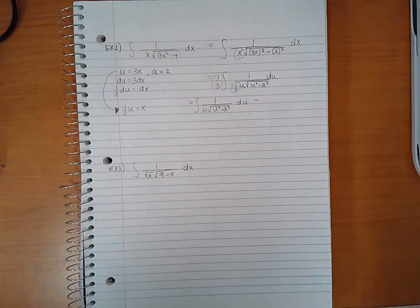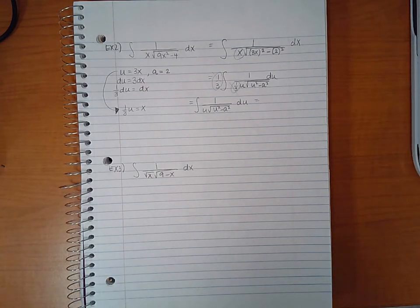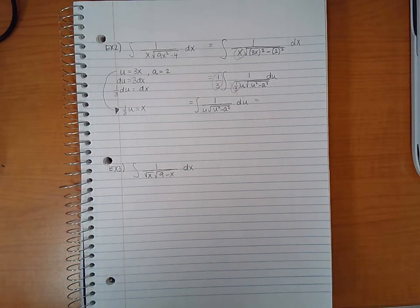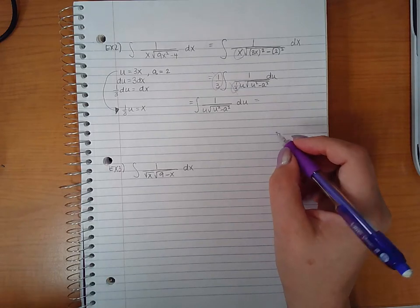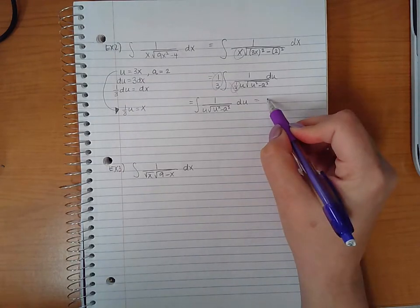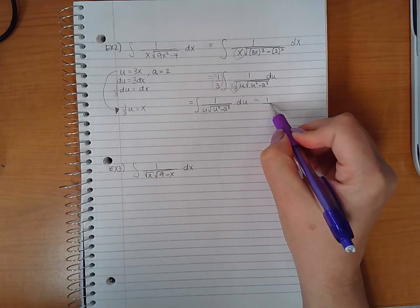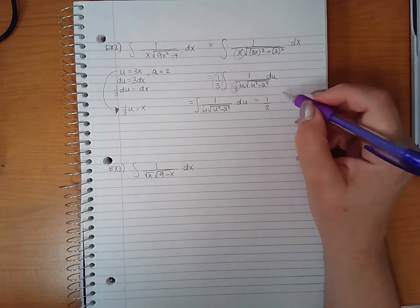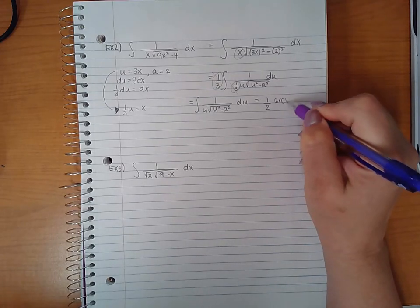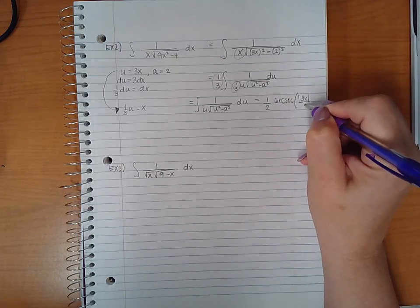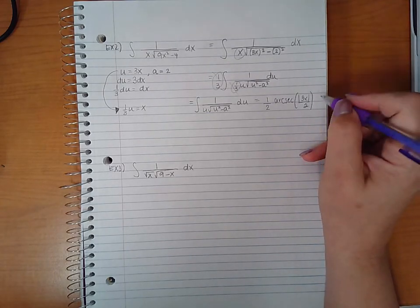And according to the third formula, it should come out to be arc secant. It will be 1 over a, and a was 2. And then arc secant u over a, the absolute value of u is 3x, and a is 2 plus c.